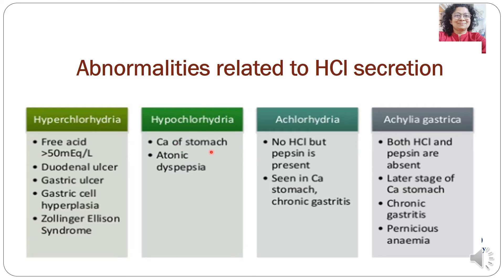Hypochlorhydria is seen in carcinoma of the stomach where cells are unable to secrete HCl, and also in atonic dyspepsia. Achlorhydria is seen when there is no HCl secretion but pepsin is present, observed in carcinoma of the stomach or chronic gastritis. Achylia gastrica, where both HCl and pepsin are absent, is generally observed in the later stage of carcinoma of the stomach and is also seen in chronic gastritis and pernicious anemia.